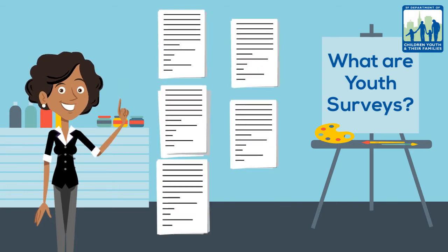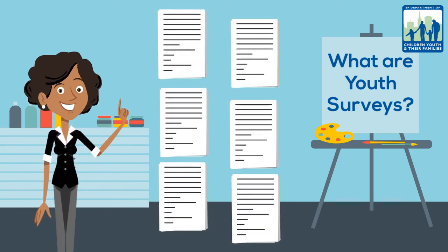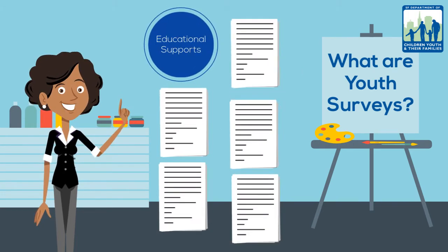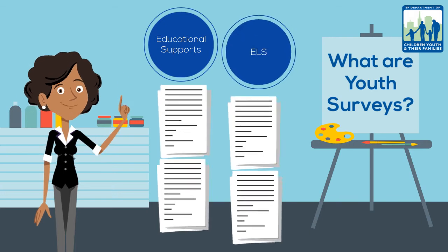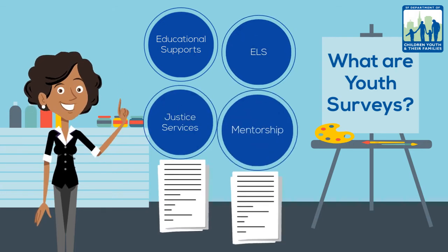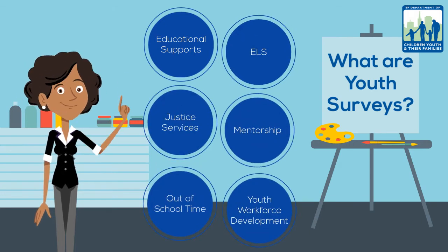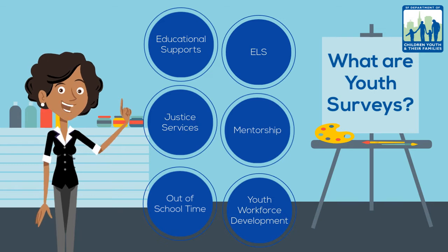There are six survey types, one for each DCYF service area: educational supports, ELS, justice services, mentorship, out-of-school time, and youth workforce development.